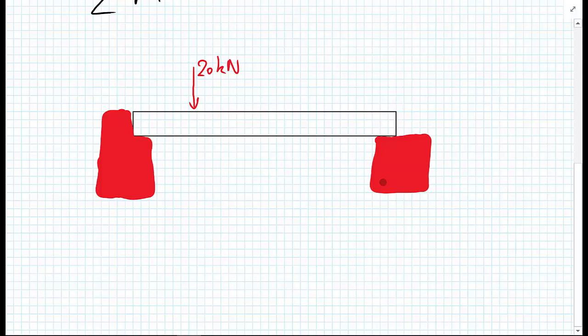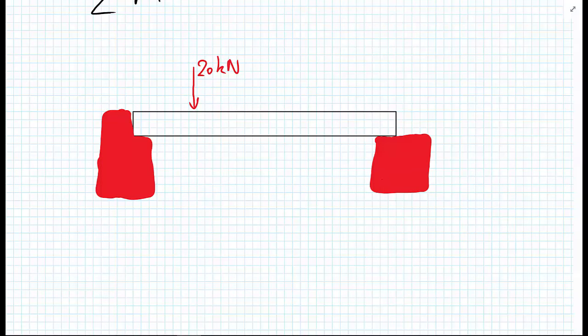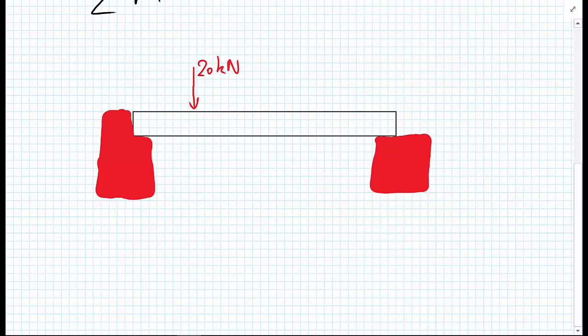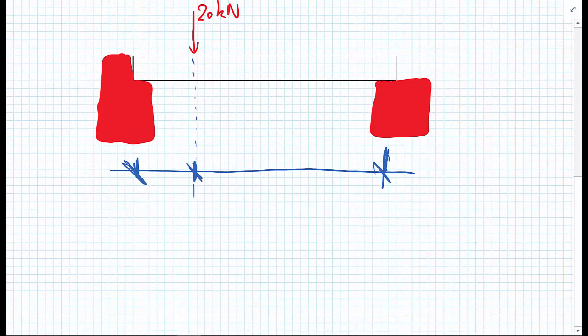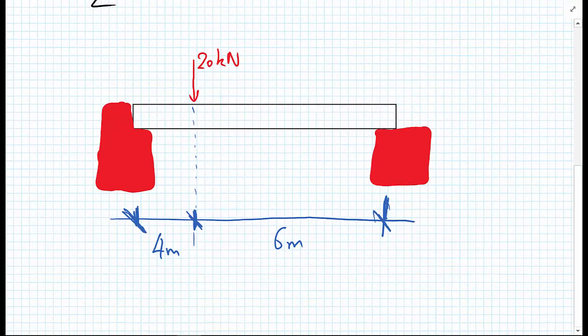And we need some dimensions to go with this now. So the dimensions, and I'm going from where the slab is supported, and I need to take the line of action of the 20 kilonewton force. I'm going to say that this distance here is 4 metres, and this distance here is 6 metres, and I'm going to label this support A and this support B.